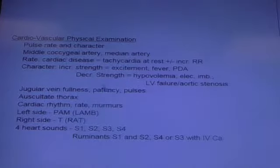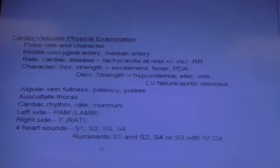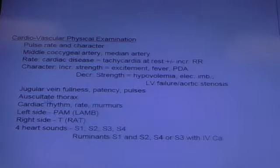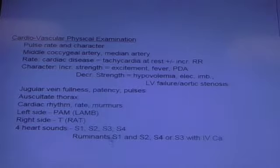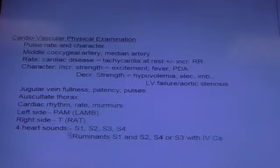We spoke about jugular vein fullness — if the animal has any right-sided heart failure, you'll usually see pulsation along the entire length of the neck. Then you're going to auscultate the thorax and evaluate cardiac rhythm, rate, and murmurs. You're evaluating whether the rhythm is regular or irregular, whether the rate is increased, decreased, or normal, and you'll have your range of normals in mind.